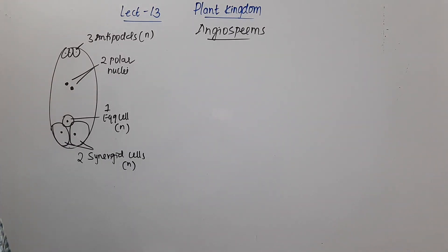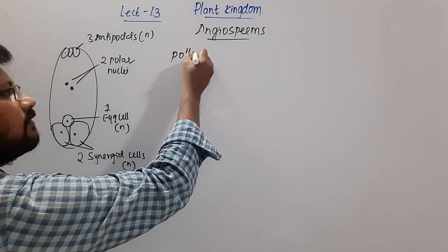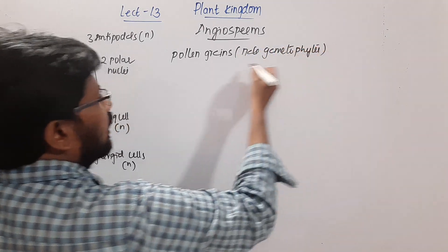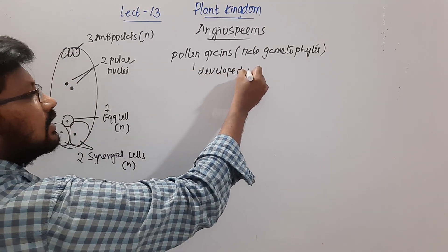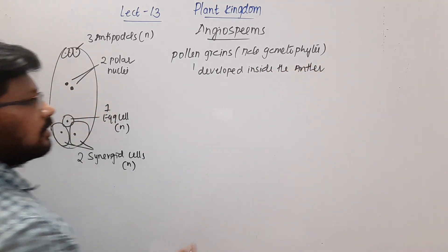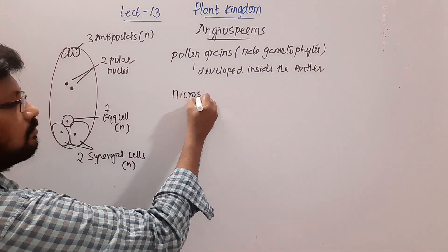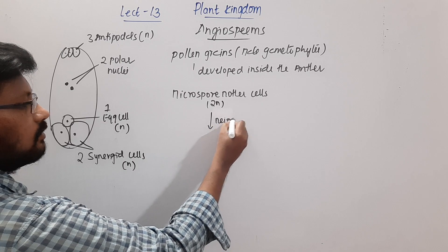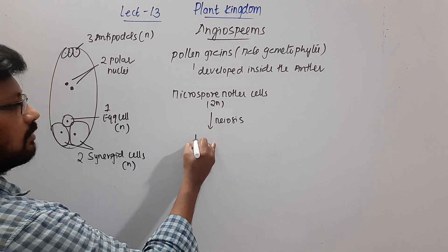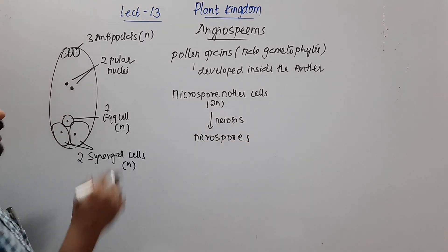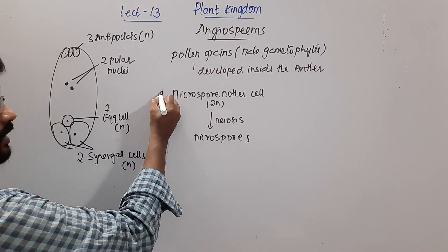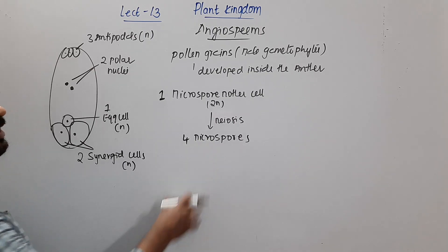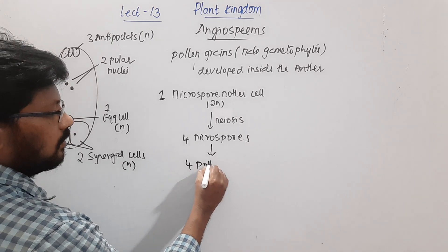Pollen grains are released from the anther. These pollen grains are referred to as the male gametophyte and are developed inside the anther. Inside the anther there are cells called microspore mother cells, which are haploid. They undergo meiosis and produce microspores — one microspore mother cell gives four microspores, which develop into four pollen grains.